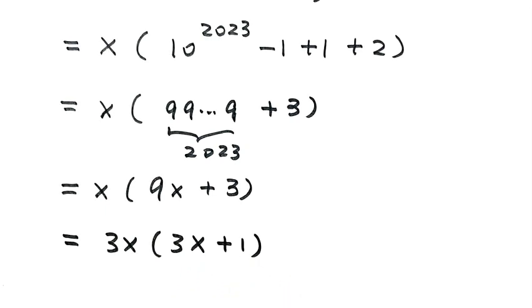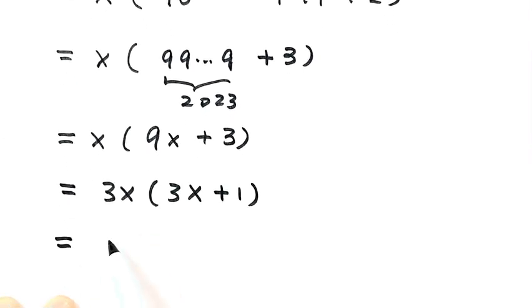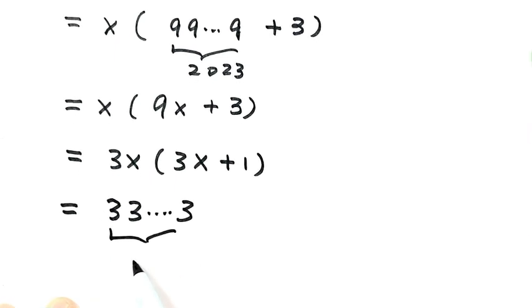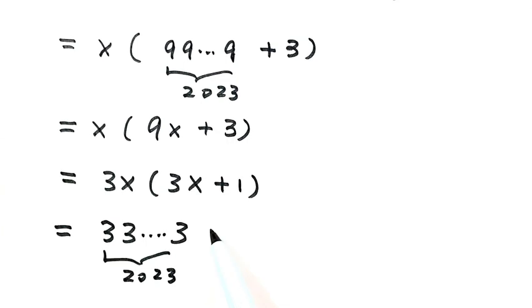So now use back substitution, because X uses 2023 ones. So then 3 times 2023 ones, so here is 333. And here just 2023.